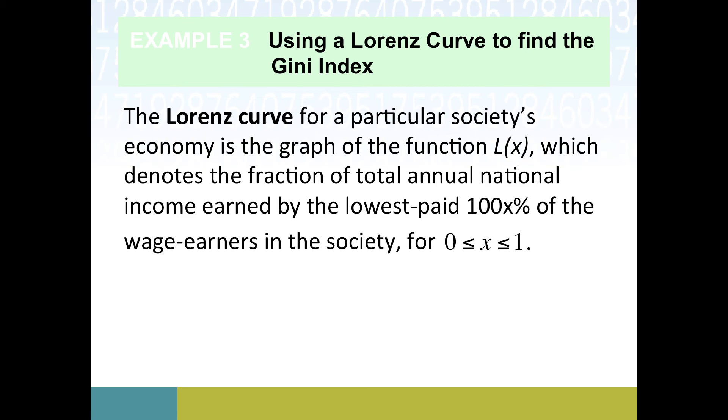This gives us, and this takes a minute to process, but the fraction of total annual national income earned by the lowest paid 100X percent of the wage earners. So X only goes between zero and one for good reason, because you want zero percent up to 100 percent of the group. Just to make a little bit of sense out of this, for instance, if we plugged in 0.4 for our Lorenz curve, then X would be 0.4, so 40 percent, the lowest paid 40 percent of the wage earners.